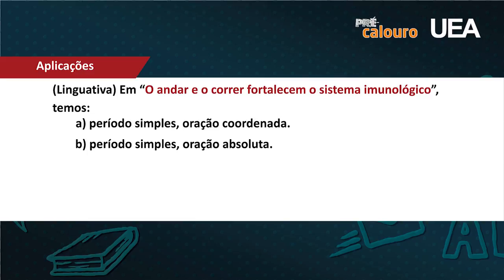É involuntário. Todos nós pensamos assim. Mas olha a relação de uma palavra com outra. Está vendo o 'o' que antecede 'andar'? É artigo. E qual é a mágica que os artigos fazem? Transformam qualquer palavra em um substantivo. Tanto 'andar' quanto 'correr' foram substantivadas pela presença do artigo — é o que se chama de derivação imprópria. E o único verbo do período realmente é o 'fortalecer'. Conclusão: estamos diante de um período simples e de uma oração absoluta. Por isso, é a letra B.